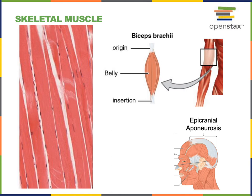Skeletal muscle tissue consists of long cylindrical cells known as skeletal muscle fibers that each contain multiple nuclei and have striations — alternating light and dark bands resulting from the overlapping thick and thin myofilaments organized into sarcomeres, which are the structural and functional units of contraction. Multiple skeletal muscle fibers are bundled together in fascicles wrapped with connective tissue, and multiple fascicles are bundled together to form a skeletal muscle organ.